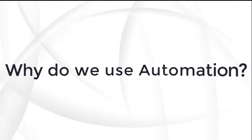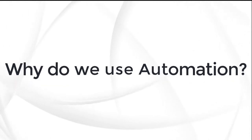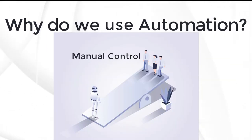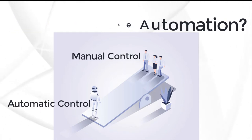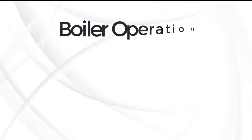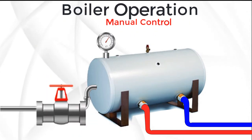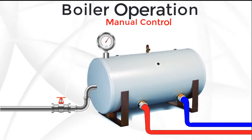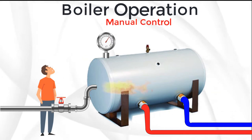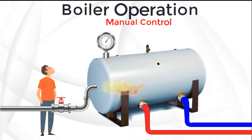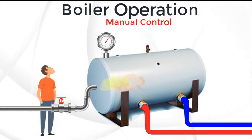So why do we use automation in industry? Let's compare manual control and automatic control. Just look at a boiler's operation under manual control. It has a temperature gauge and a handle valve to control fuel. A human must be there to look at the temperature gauge and control the handle valve, and will close the valve once the temperature reaches the required value.